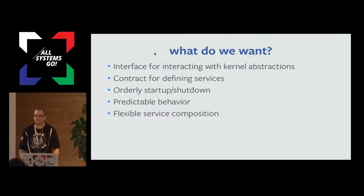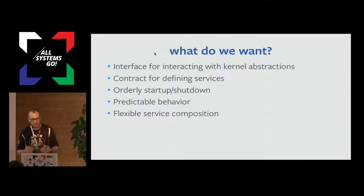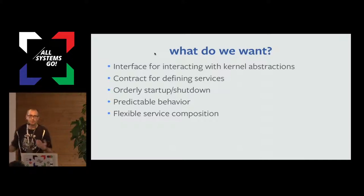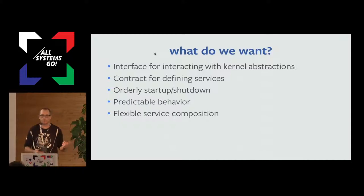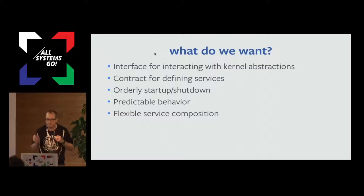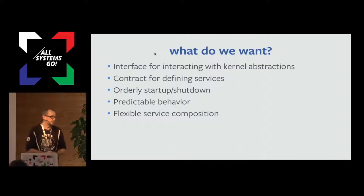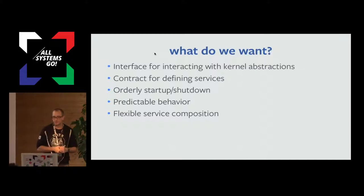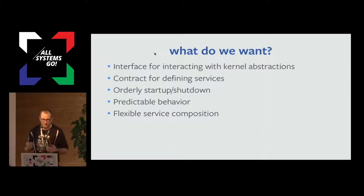What do we really want out of a process manager? We want an interface for interacting with kernel abstractions — something that will set up processes and services in a predictable way. We need a contract for defining services, a way for users to define how they want to run stuff. We want orderly startup and shutdown so things start in the right order — if we need to reorder, we just change the config and restart. We want clean shutdown without blasting signals, predictable behavior, and no weird random bugs from an unescaped backtick in a bash script — which has happened a number of times.